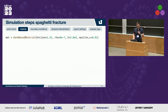For the temporal discretization, you can easily define the algorithm. Here we use the dynamic one - the velocity-Verlet algorithm - with 30,000 time steps. For export settings, we have to define a name and a path where we want results to be written. This value of 20 means that every 20 time steps, VTK files are written with the help of the package WriteVTK.jl.